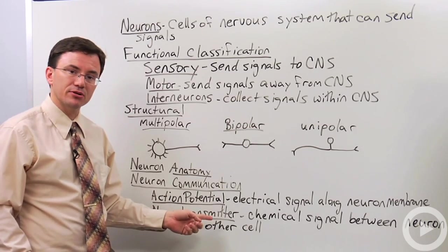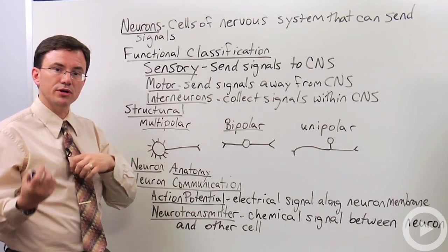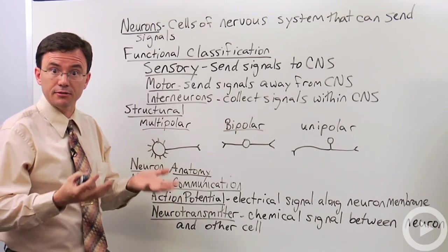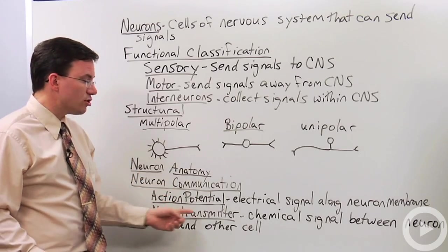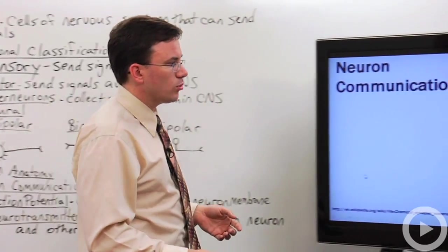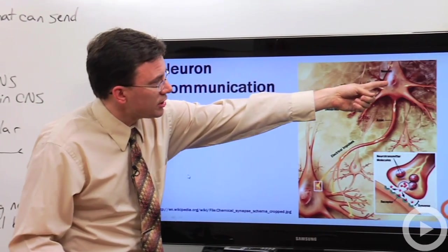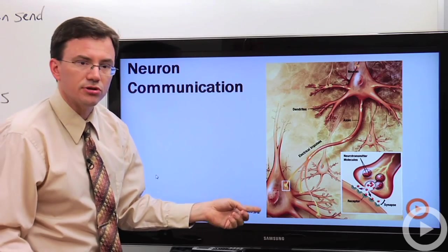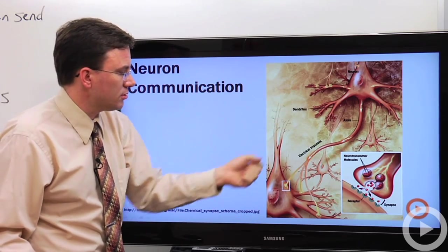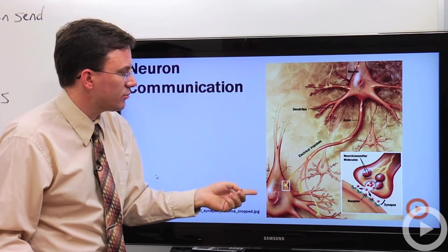Instead, it has to release a chemical at these connections between one neuron and the next neuron or a neuron and its effector cell, like a muscle or a gland. And these neurotransmitters are these chemical signals. Let's take a look to see how they work. So here we have one neuron, a multipolar neuron. Here's another multipolar neuron. This must be somewhere in the brain or spinal cord since we have all these multipolar neurons communicating with each other.